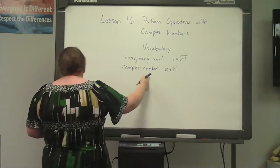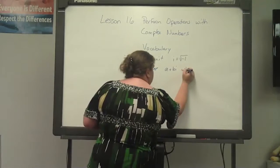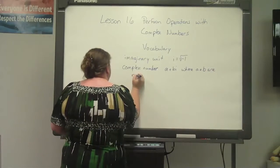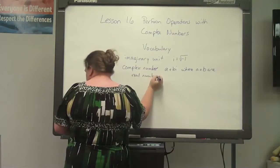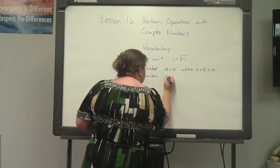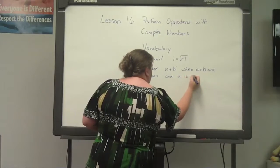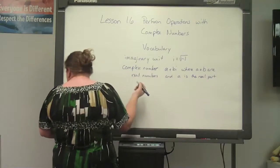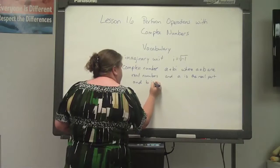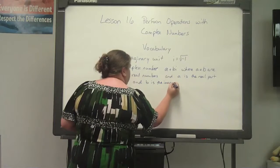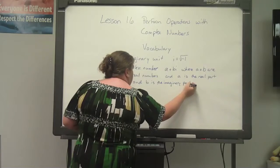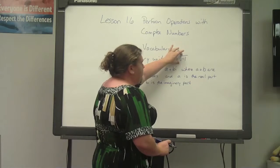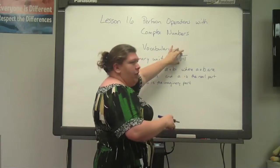A complex number is written in standard form as a plus bi, where a and b are real numbers. The a is the real part and the b is the imaginary part, letting you know that b was originally part of your negative inside your radical.